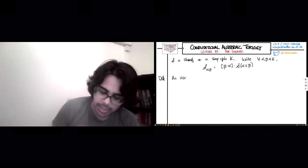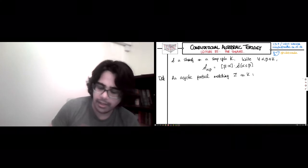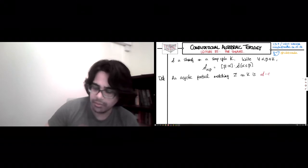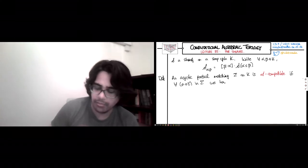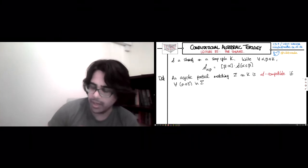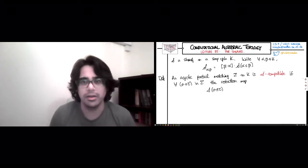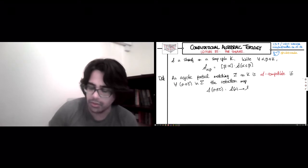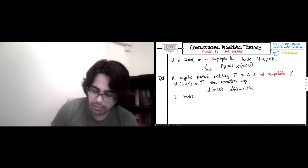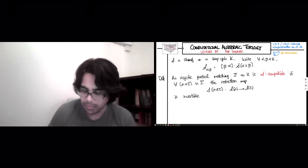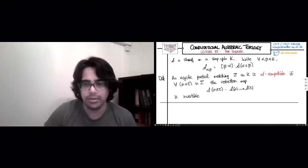So an acyclic partial matching sigma on K is S-compatible, S being the sheaf, if for every pair sigma less than tau in the matching, we have the restriction map S sigma less than equal to tau—this exists because sigma must be a codimension one face of tau. This goes from S, the stalk over sigma to the stalk over tau is invertible. So this is just an invertible map of linear spaces. And that is what makes an acyclic partial matching compatible with the structure of a sheaf.